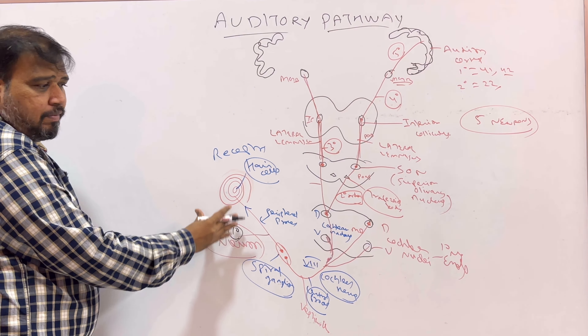Let me repeat: E for eighth nerve. C for cochlear nucleus — dorsal and ventral. O for superior olivary nucleus. L for lateral lemniscus. I for inferior colliculus. M for medial geniculate body. A for auditory cortex.